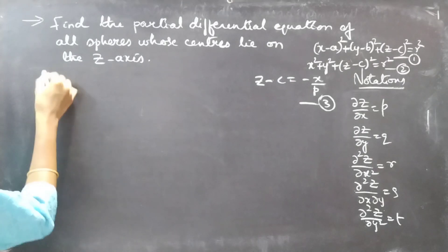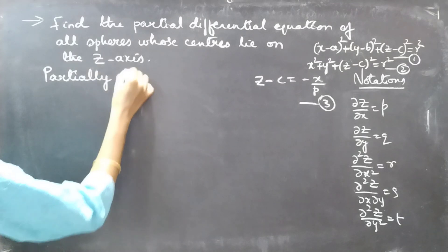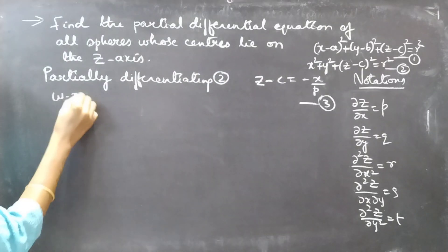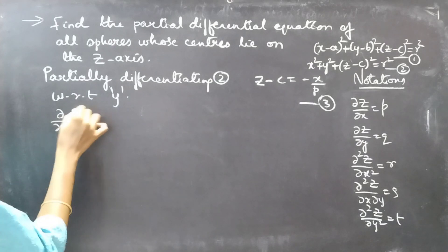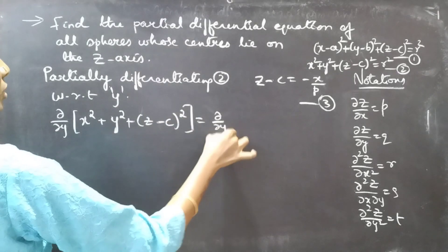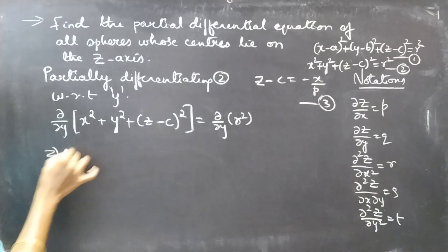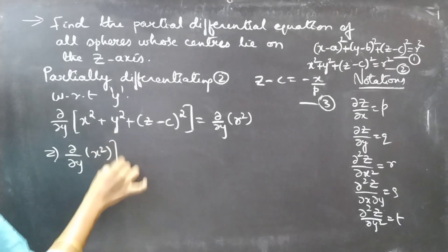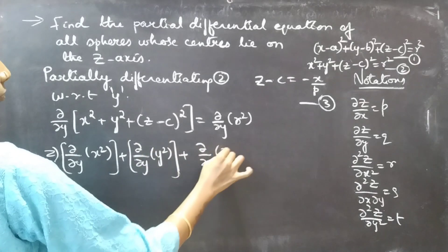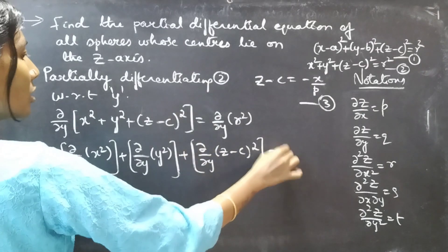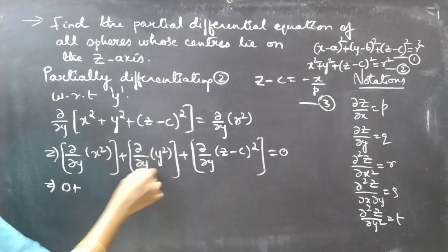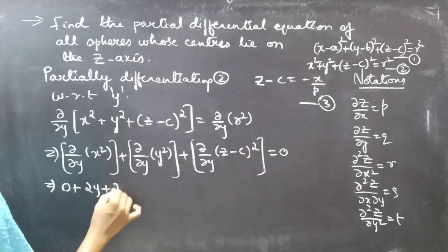Now let's partially differentiate Equation 2 with respect to y. Applying ∂/∂y on both sides of Equation 2, and treating x as constant: the partial derivative of x² is 0, the partial derivative of y² is 2y, and the partial derivative of (z − c)² with respect to y is 2(z − c) · ∂(z − c)/∂y.